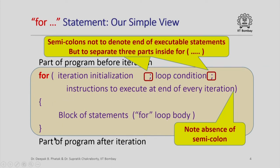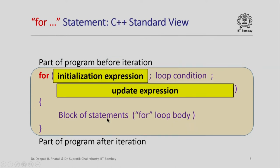The C++ standard specifies that a for loop must have an initialization expression and an update expression, rather than just initialization code or instructions. So instead of initialization code, you must have an initialization expression, and instead of instructions to execute at the end of every iteration, you must have an update expression.